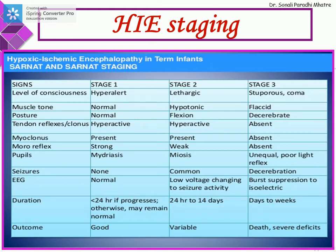In Stage 2, the baby becomes lethargic. Muscle tone is decreased, posture is flexed, tendon reflexes are hyperactive, and Moro is weak. Pupils go towards miosis. Seizures are very common — 15 to 20% may have seizures. Duration is 24 hours to 14 days. Outcome in this stage can be very variable depending on the specific manifestations the baby presents with.